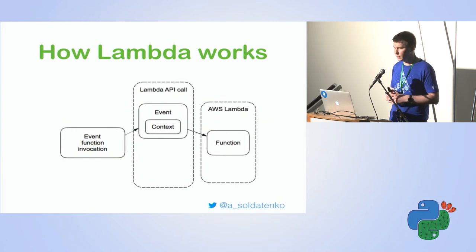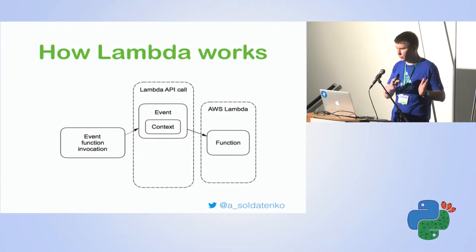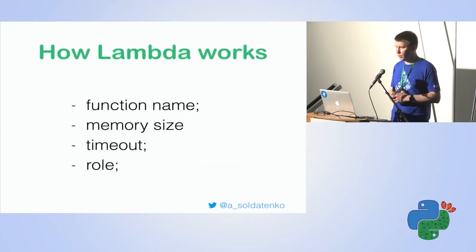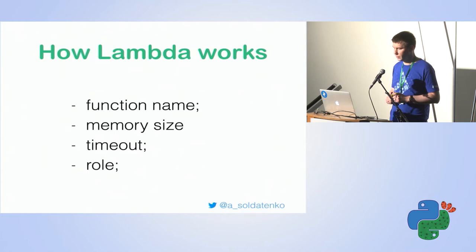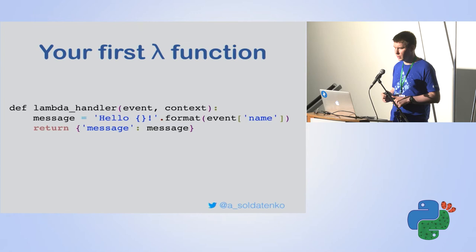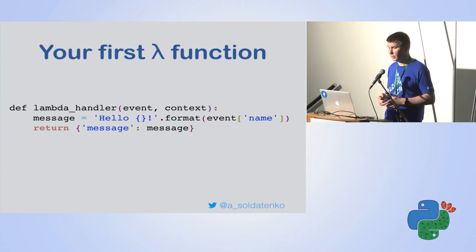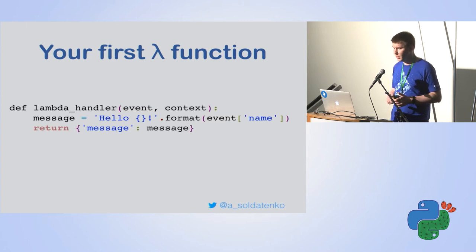After an asynchronous call, you may see results in a database after some time — say 30 minutes. When talking about Lambda you should keep in mind four things: function name, memory size, timeout, and role — those are the four minimum building blocks. Now let's do some coding. The simplest Python example is one function with two required arguments: event and context. Then you can run it and see results.